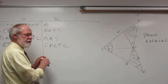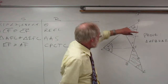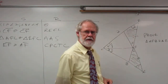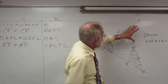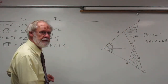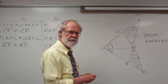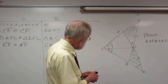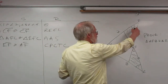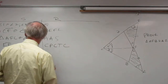EF is congruent to AF because corresponding parts of congruent triangles are congruent — CPCTC. We have two congruent triangles, so their corresponding parts must be congruent, and this side corresponds to this one. Now we have an angle and a side, and we can get angle 5 congruent to angle 6.